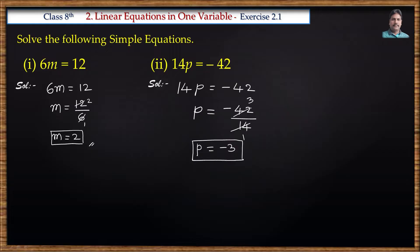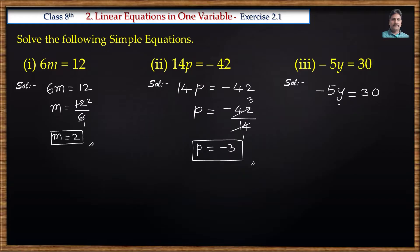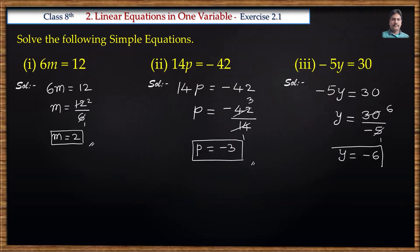This is the solution. Next problem: minus 5y is equal to 30. Let us solve this one. We need y value, so we transpose minus 5 to the right side and divide. 30 divided by minus 5: 5 sixes are 30, so y is equal to minus 6.